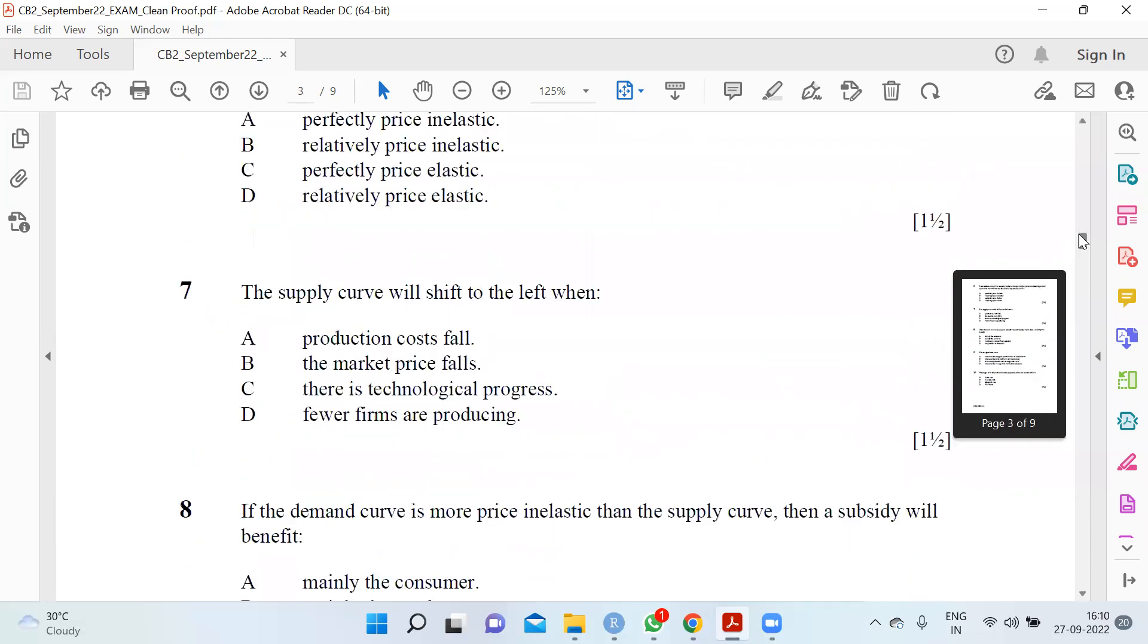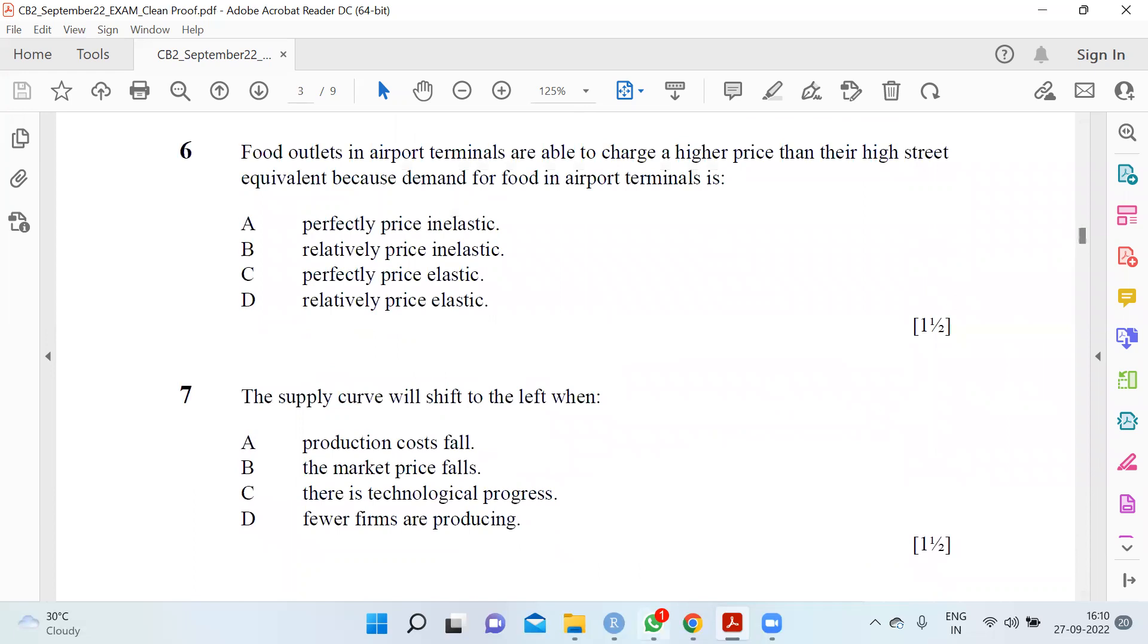Question six: Food outlets in airport terminals are able to charge a higher price than their high street equivalent because demand for food in airport terminals is relatively price inelastic. They can charge anything because if somebody wants to have it, they will have it.